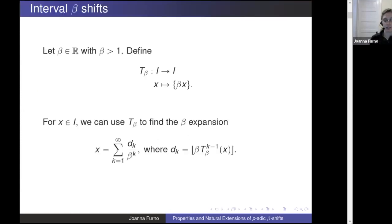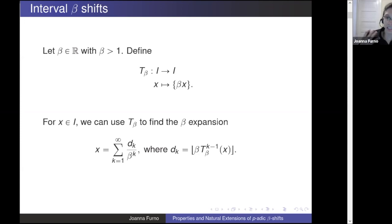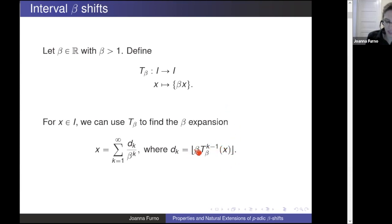Classically, what's a beta shift? You work on the interval, you take a real number that's bigger than one, so when you multiply, some of the things are going to land outside of the unit interval, and then you take the fractional part to come back in. This transformation is connected to number theory because you can use it to write out beta expansions — expand your numbers with a base of beta. You take your iterates: multiply x by beta, then take the integer part to get your digits.